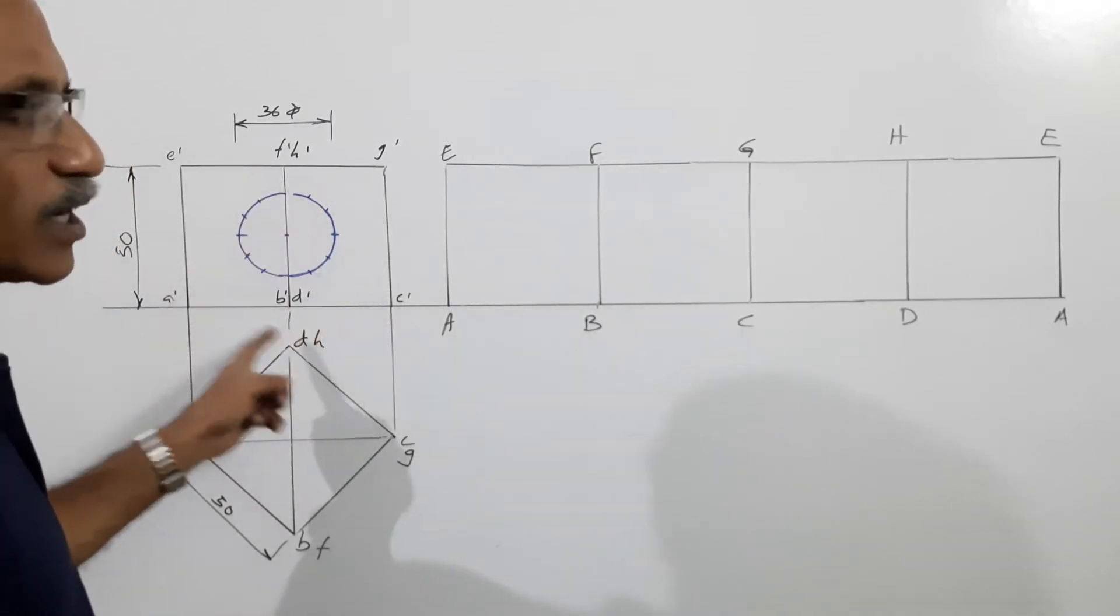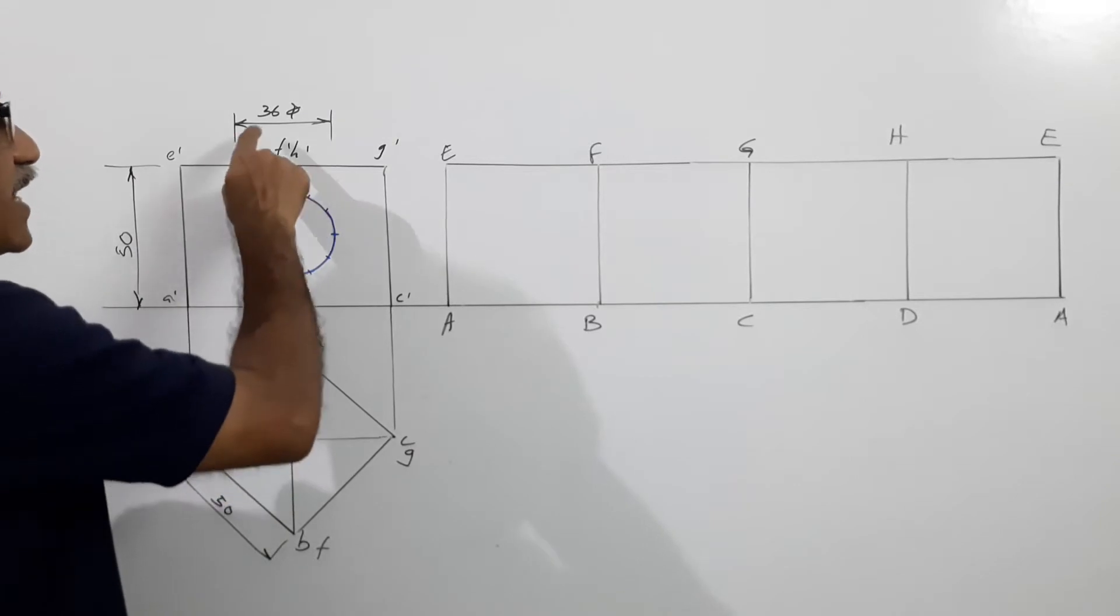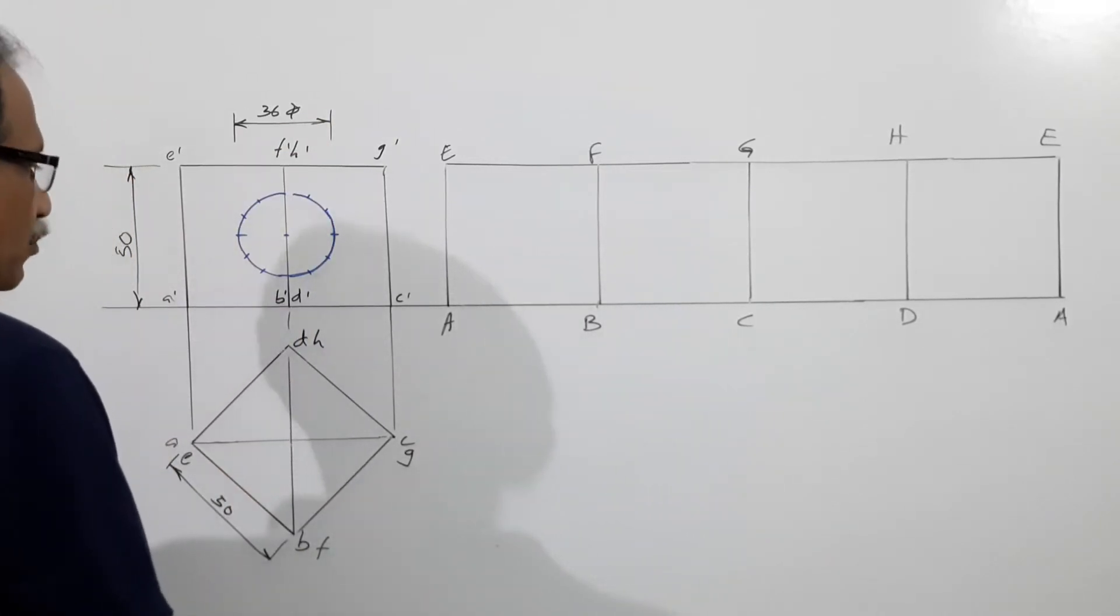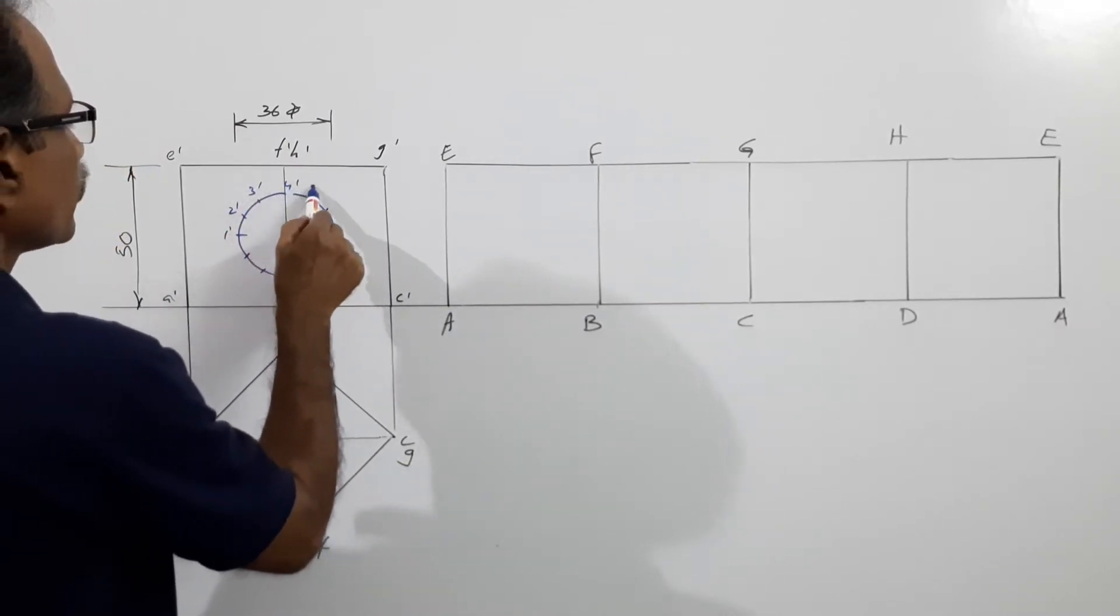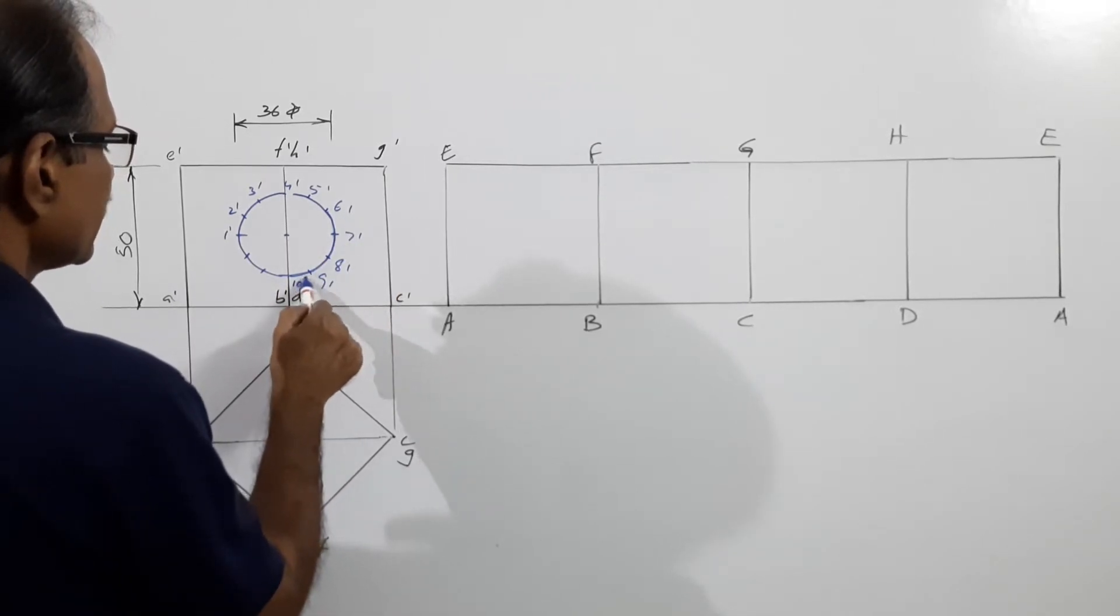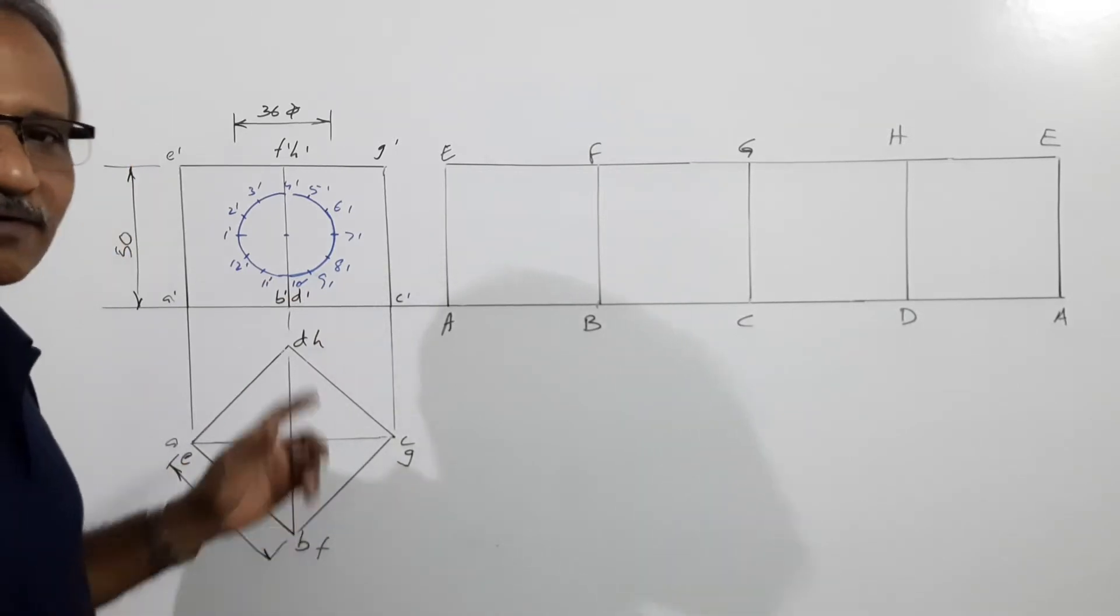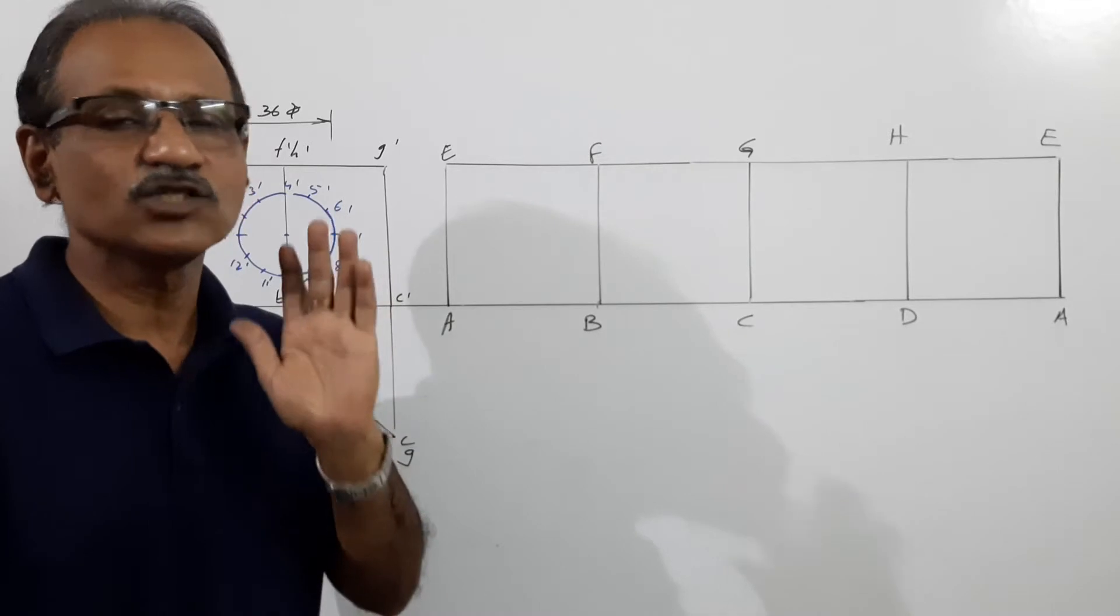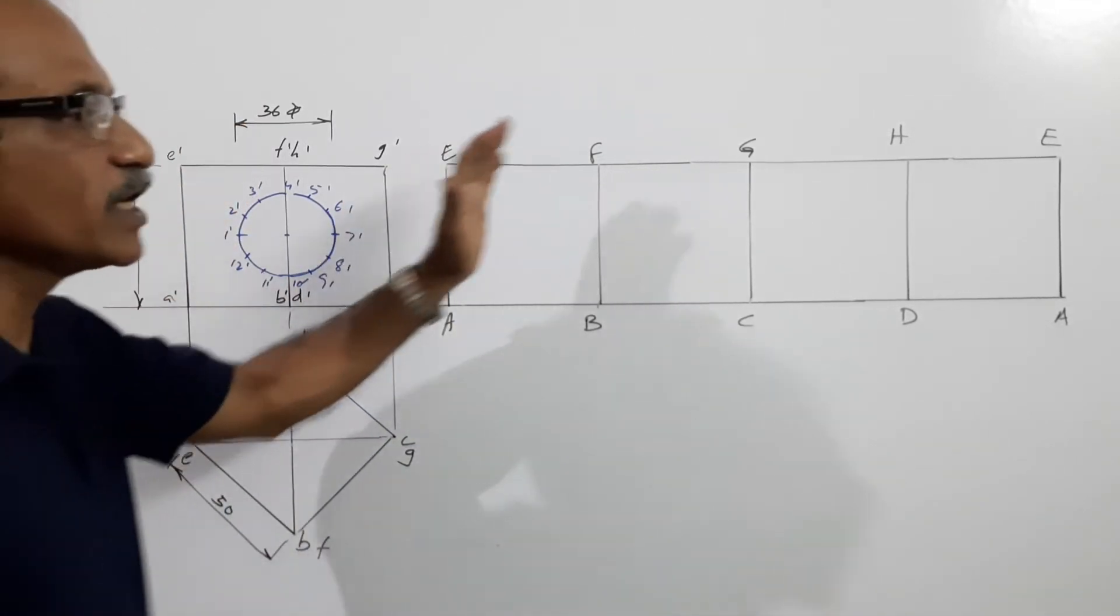Now this is the circular hole with the center. Draw a circle 18mm radius, that is 36mm diameter. Then I name the points 1 dash, 2 dash, 3 dash, 4 dash, 5 dash, 6 dash, 7 dash, 8 dash, 9 dash, 10 dash, 11 dash, 12 dash. I have taken 12 points on the circle. It is absolutely necessary, otherwise you may not get the proper shape.